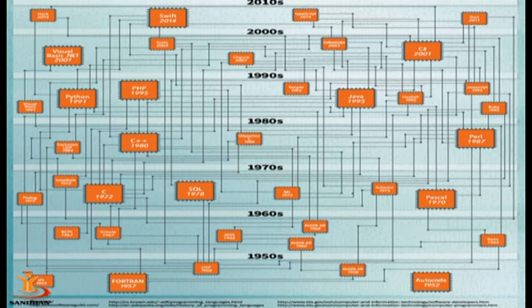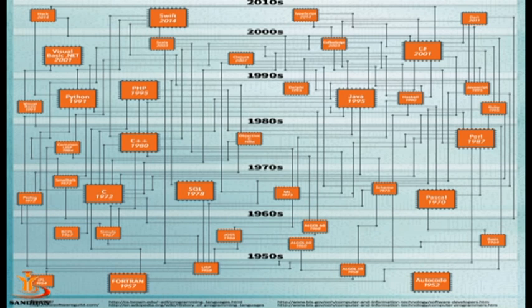As seen in the figure, in the 1950s the Fortran language came into existence, then in the 1960s BCPL, then Pascal in the 1970s, and C language. As we see in the diagram, Fortran and Pascal represent unstructured languages, and the migration goes towards structured languages from the 1950s to 1970s. C is a structured language, Basic is a structured language, and then object-oriented programming languages came into existence in the 1980s.